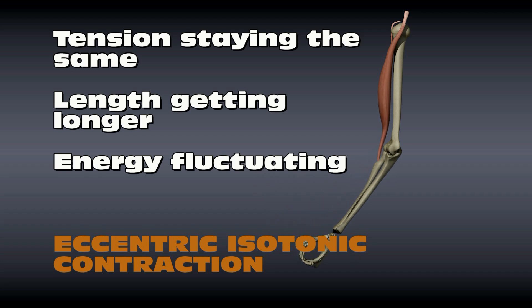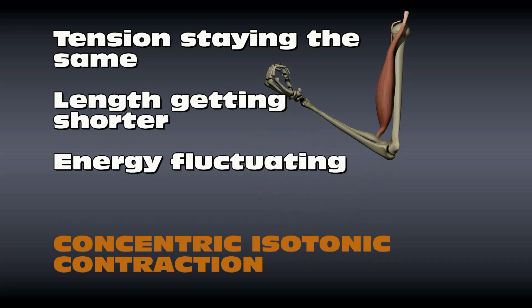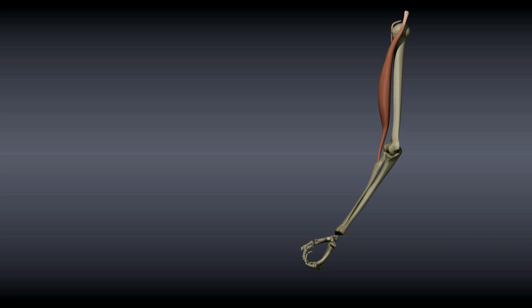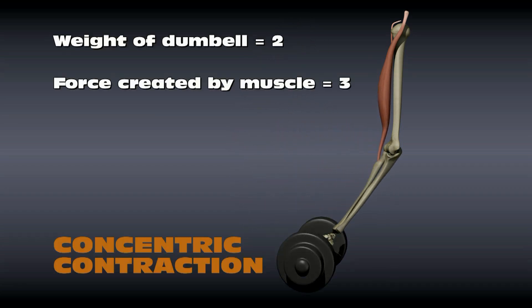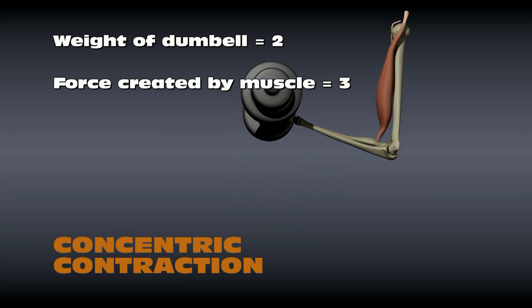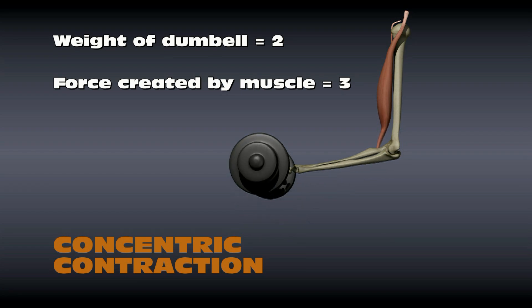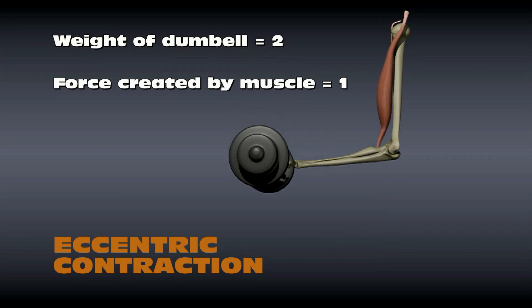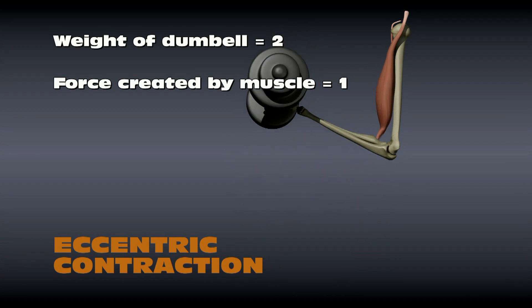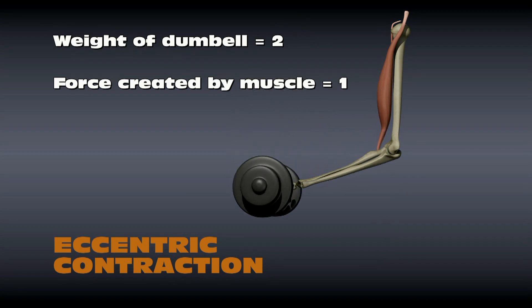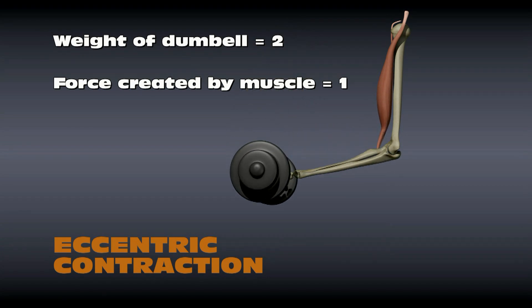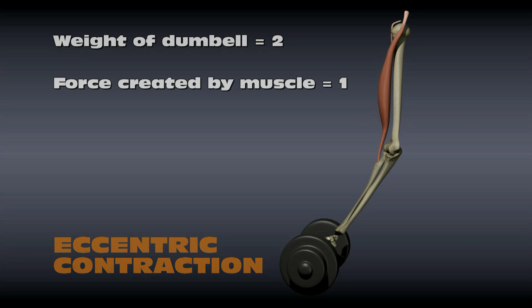If the force the muscle is producing is less than the opposing force, the muscle lengthens — this is called an eccentric contraction. So if this bicep's muscle is being used to do curls, energy goes into the muscle to cause it to contract and pull on the tendon, which pulls on the bone. On the way up, the muscle force overcomes the weight of the dumbbell. On the way down, the muscle is still contracting and creating force to oppose the dumbbell. If it didn't, the arm would just fall with the weight of the dumbbell. But the weight of the dumbbell is overcoming the force created by the muscle, and the muscle lengthens — this is an eccentric contraction.